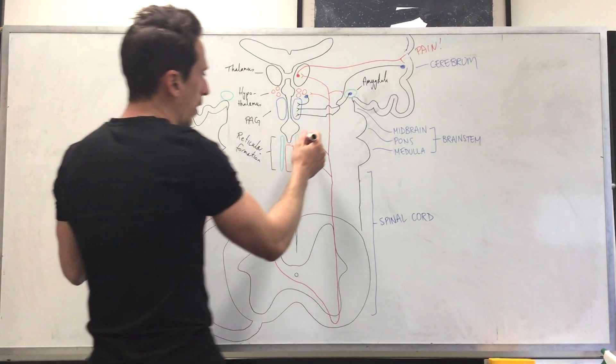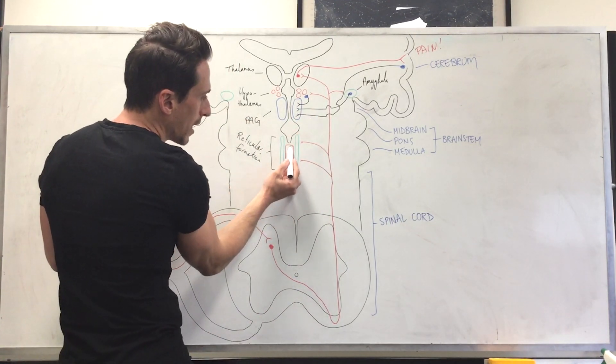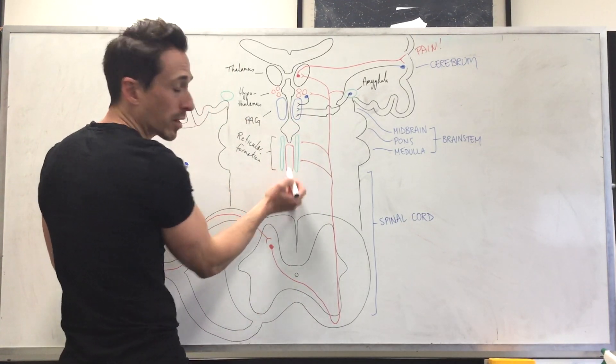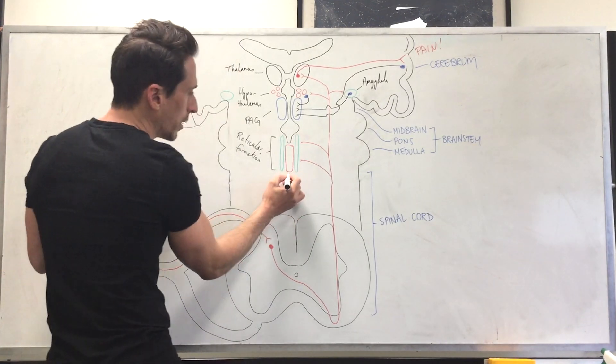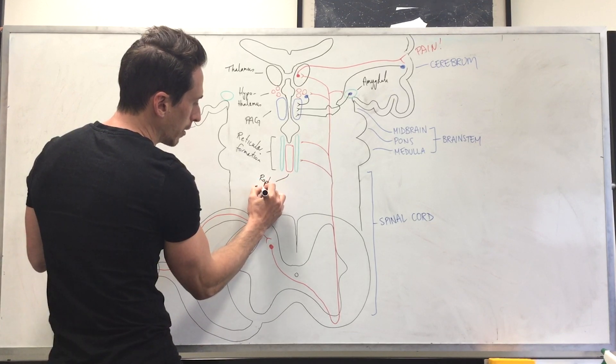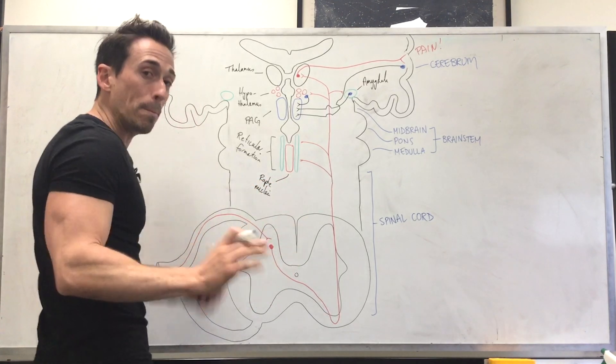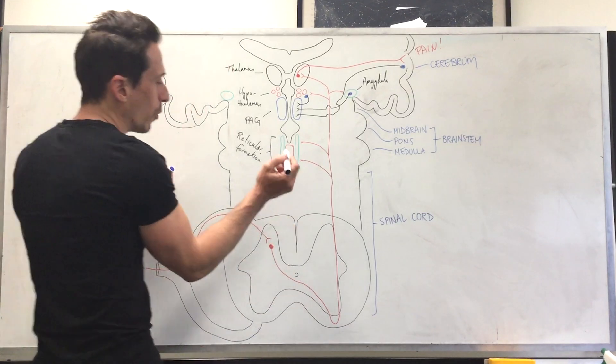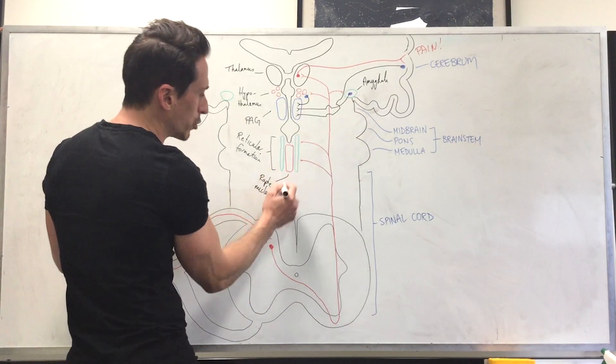Called the raphe nuclei or raphe nuclei or magnus raphe nuclei. And what this does is they produce serotonin.